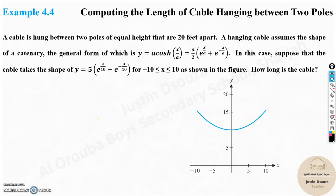Now we will solve real-world problems involving arc length. Here we are supposed to compute the length of cable hanging between two poles. A cable is hung between two poles of equal height that are 20 feet apart. A hanging cable assumes the shape of a catenary.